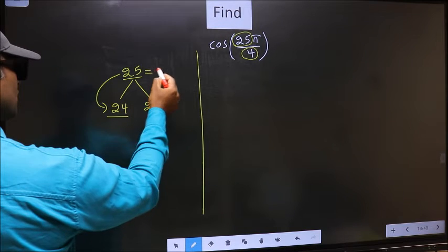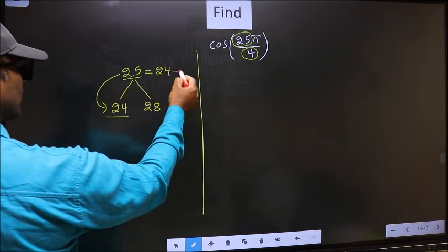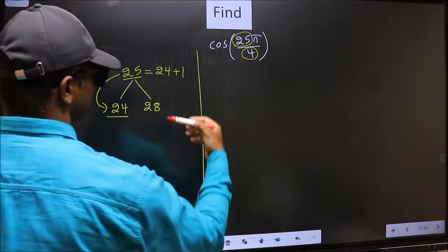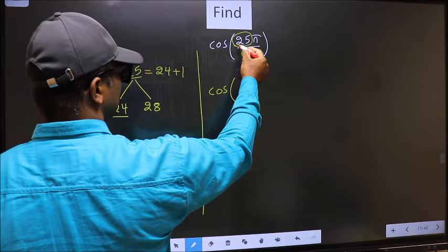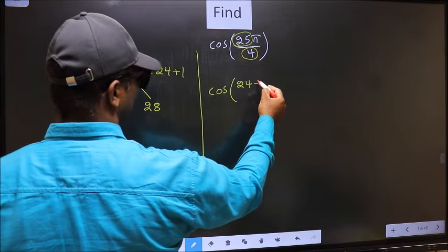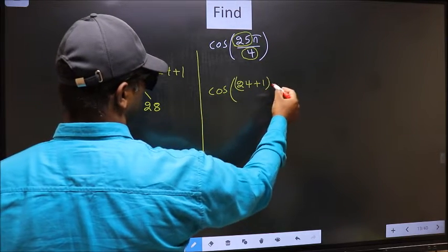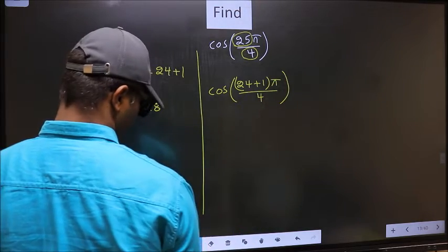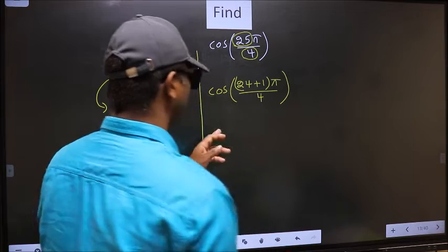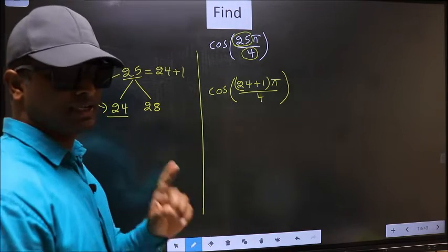So 25 should be written as 24 plus 1. So this will become cos. In place of 25, now you should write 24 plus 1 pi by 4. This is your step 1.